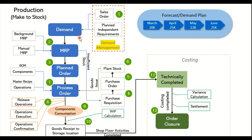Once demand is created, the second step is to execute MRP. There are two options: a background MRP job scheduled to run periodically in the system, or a manual MRP run executed by the user on the material. During MRP, the system evaluates the existing stocks of the material in the plant and, based on available stock and forecast quantity, adjusts the quantities.